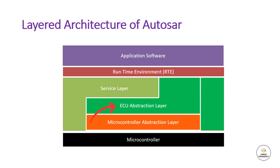The ECU abstraction layer is a software layer in the AutoSAR architecture that provides an abstraction layer between the ECU hardware and the rest of the software components in the system. It makes higher software layers independent of the ECU hardware layout, and also contains drivers for external devices. It offers an API for access to peripherals and devices regardless of their location — such as microcontroller internal or external — and their connection to the microcontroller. The purpose of the ECU abstraction layer is to provide a standardized interface for the ECU hardware, which includes the microcontroller, sensors, actuators, communication interfaces, and other hardware. This allows the development of portable and scalable software for different ECU hardware platforms.